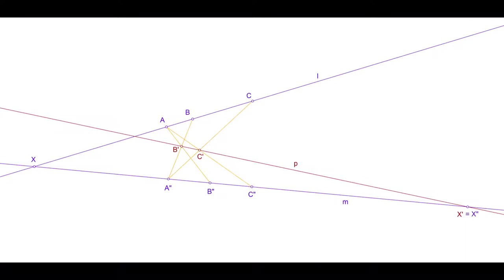No, P would remain the same, since it would still lie in the same intersection of the crosslines A and B, and also in X double prime.